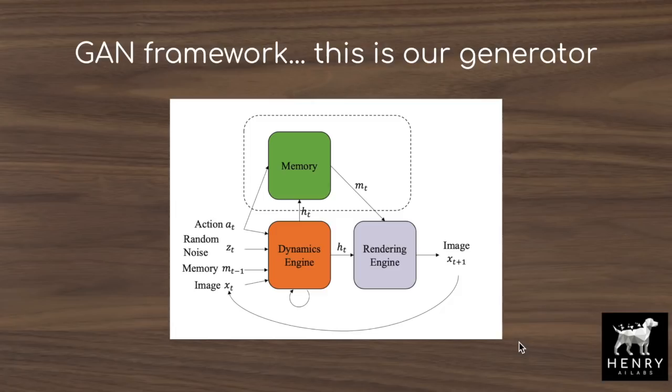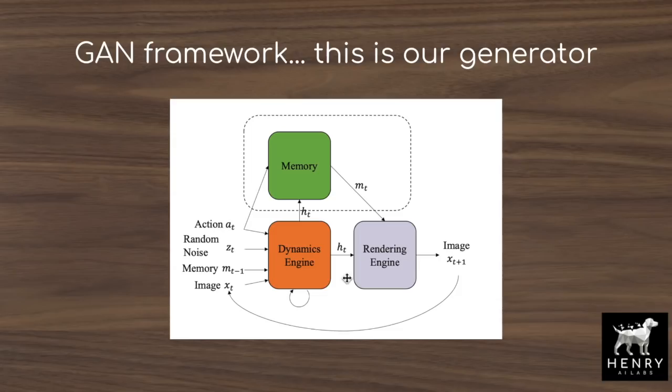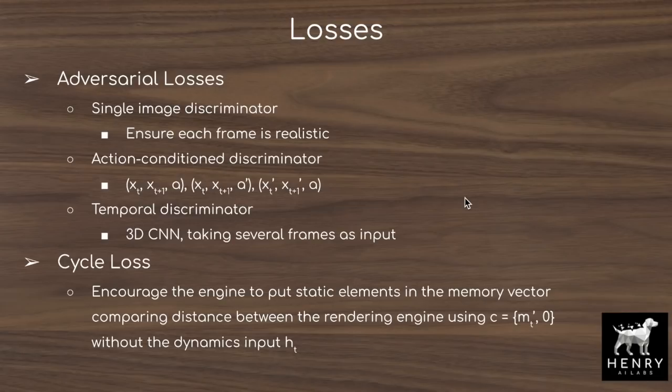In the generative adversarial network framework, this is our generator: the dynamics engine passes information into the memory and the rendering engine; the memory passes information into the rendering engine that produces the image to be passed to the discriminator with different loss functions on the generated image. All of this is differentiable — there are no discrete operations that would prevent the gradient from flowing back from the generated image into the read and write parameters of the dynamics engine. We train this generator with three adversarial losses and a regularizing cycle loss on the memory.